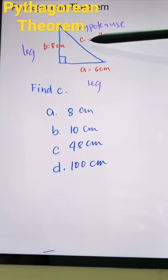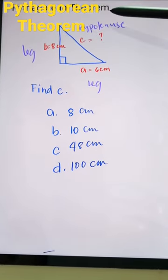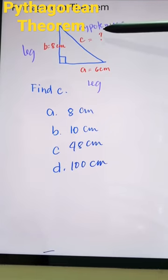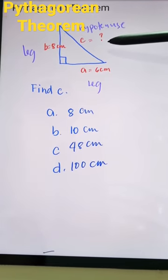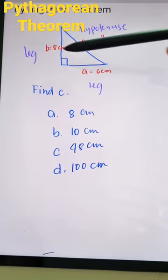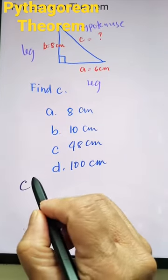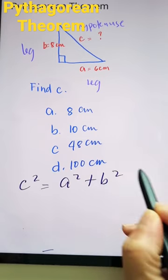To find the missing lengths of the side of the right triangle, we can use Pythagorean Theorem. Pythagorean Theorem says that the square of the hypotenuse is equal to the sum of the square of the two legs. So we have here c squared is equal to a squared plus b squared.